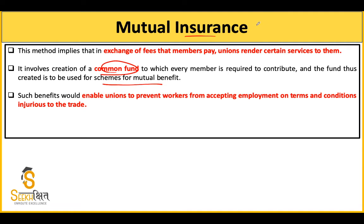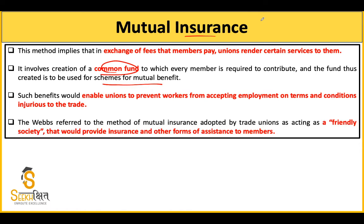इसमें effect यह होता है कि अगर एक या पाँच workers ने एक बार employer की demand मान ली तो फिर सबको उसमें आना पड़ता है। इसलिए unions कहती हैं - तू चिंता मत कर, जब तक job नहीं मिलती हम fund से तेरा ध्यान रखेंगे। Webb and Webb ने mutual insurance method को 'friendly society' कहा है - जिसमें सब लोग contribution कर रहे हैं for assistance of the weak। इस तरह का सवाल 2017 के paper में भी देखने को मिल जाएगा।